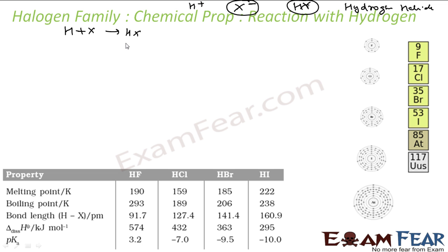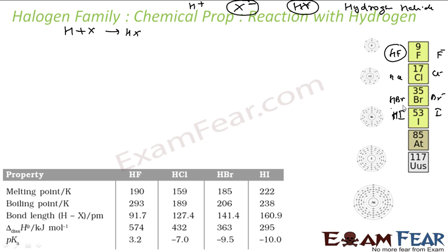If you talk about the stability of HX: HF is more stable than HCl, then HBr, then HI. You can think of it as F⁻, Cl⁻, Br⁻, I⁻ — so HF is more stable than HCl, then HBr, then HI.